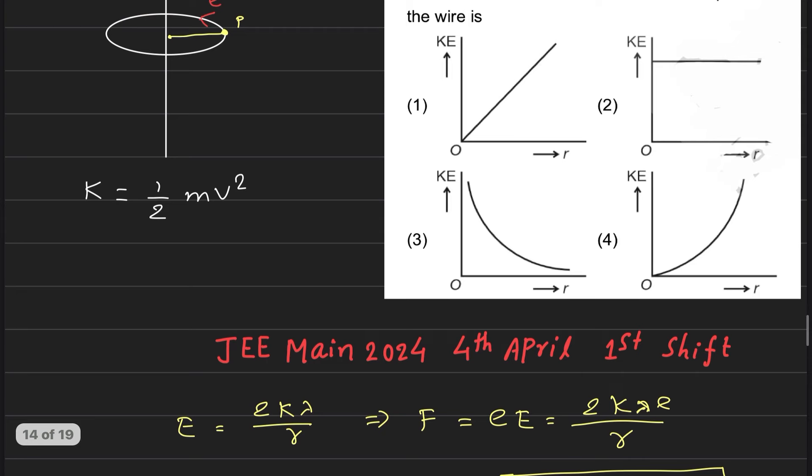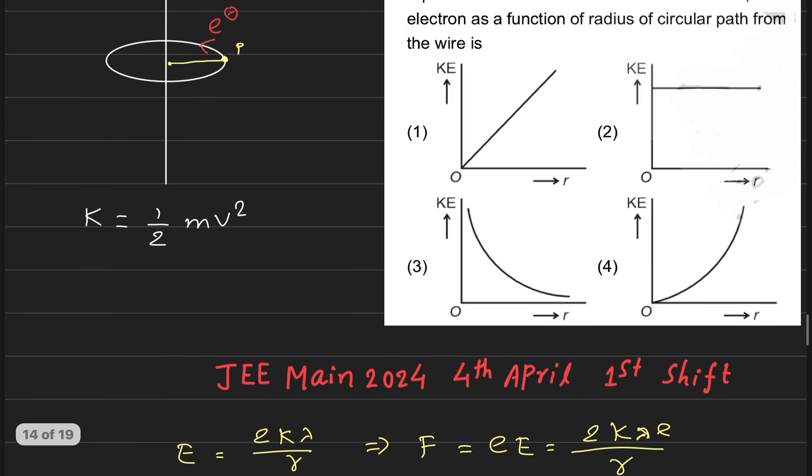So what will we say? The kinetic energy graph with the radius will be a straight line parallel to r axis. That is option number 2, the right answer.